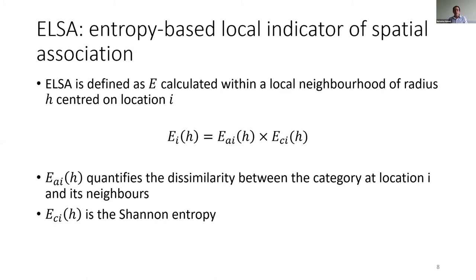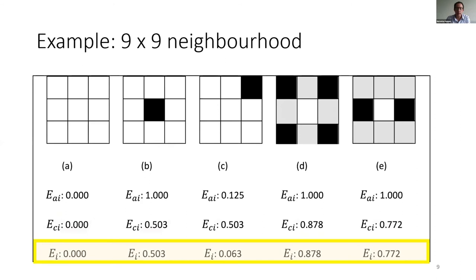We can combine those together to get our final ELSA statistic, illustrated in the bottom line here. Note this is actually a three-by-three neighbourhood, not a nine-by-nine.